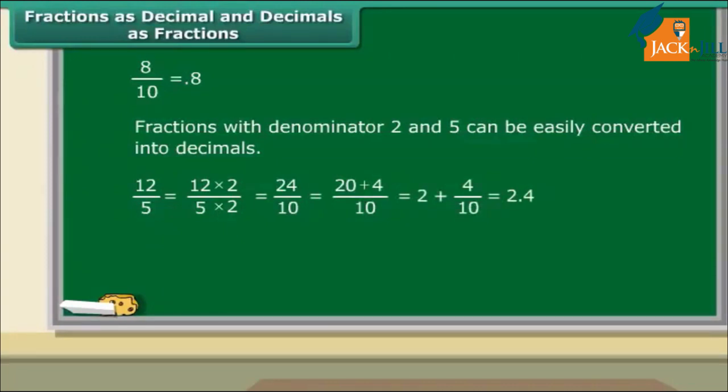Consider another example. Convert 3 upon 2 into a decimal. The denominator of the fraction is 2. To know the number of tenths involved, multiply and divide the fraction by 5. Thus, the new fraction is 15 upon 10. So, we have 1 and 5 one tenths which make it 1.5. Another way to convert such fractions is to simply divide the numerator by the denominator.